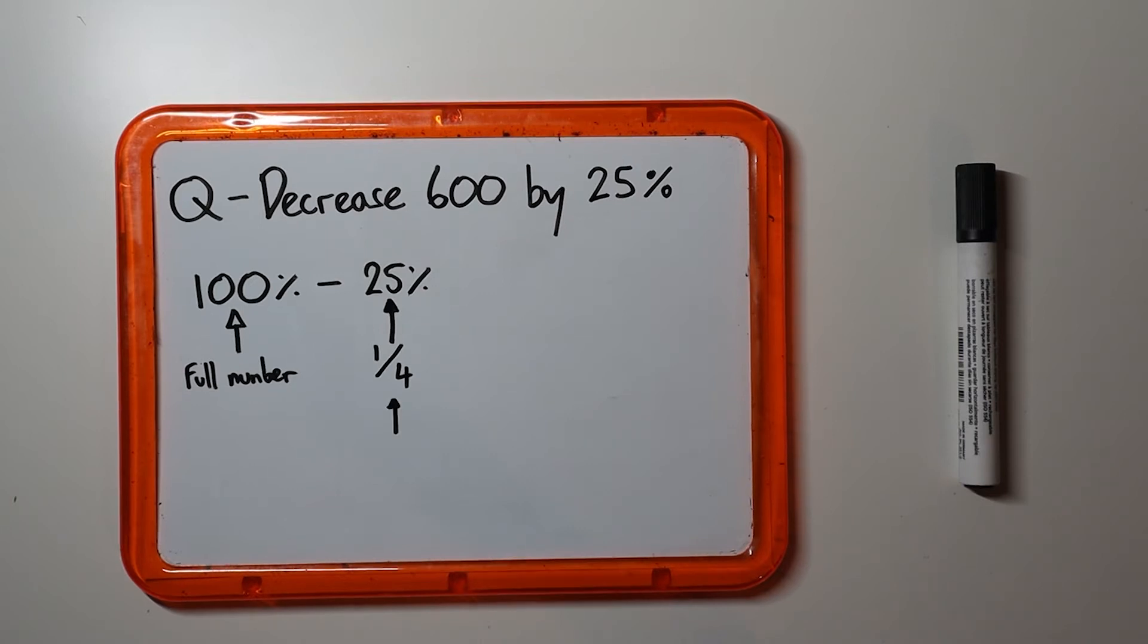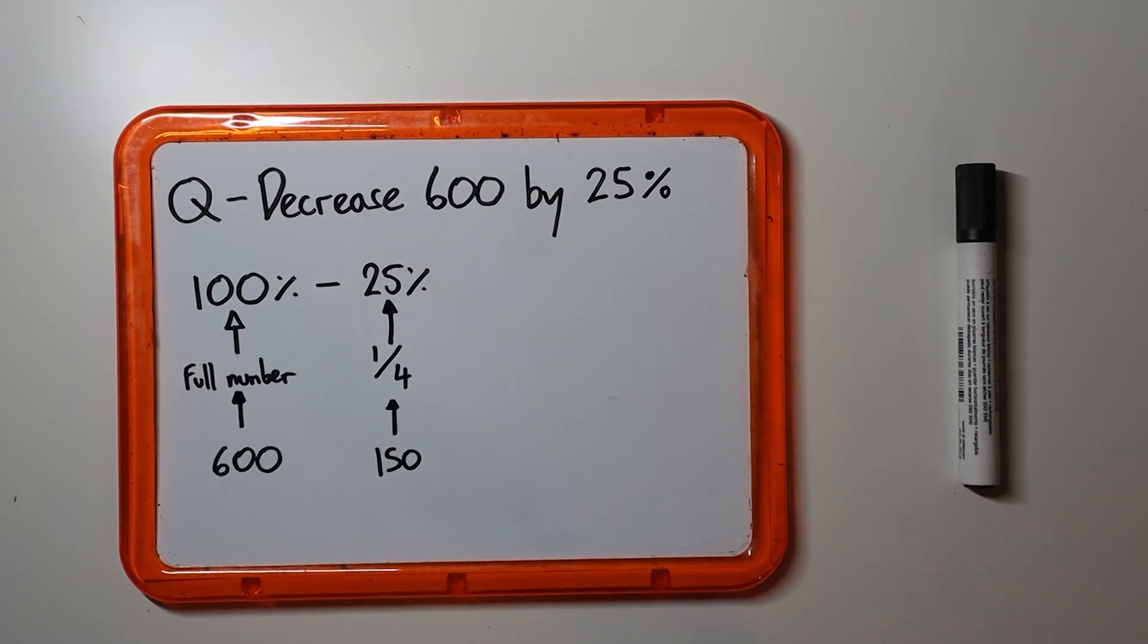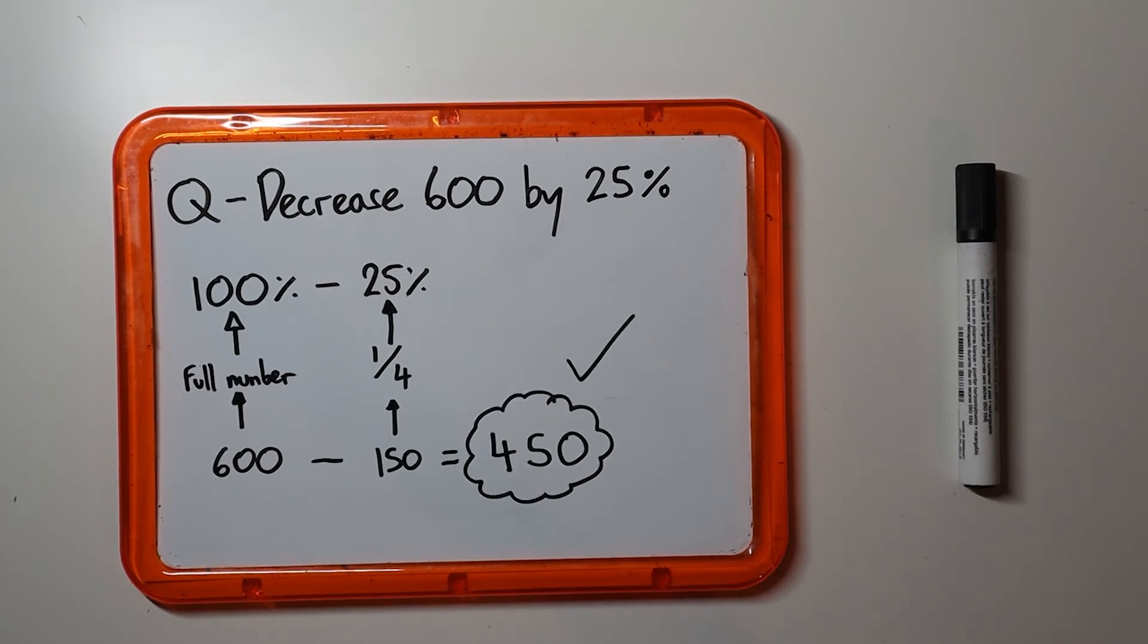Now a quarter of 600 is 150, so 600 subtract 150 equals 450 which is the answer.